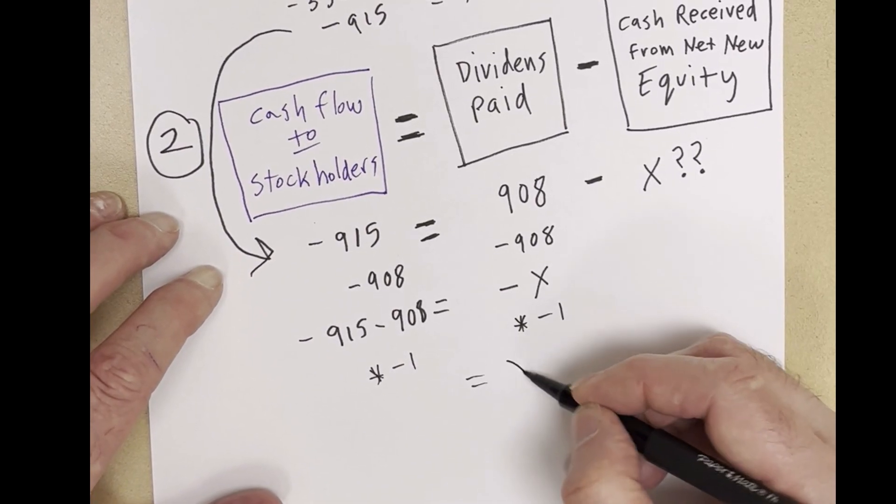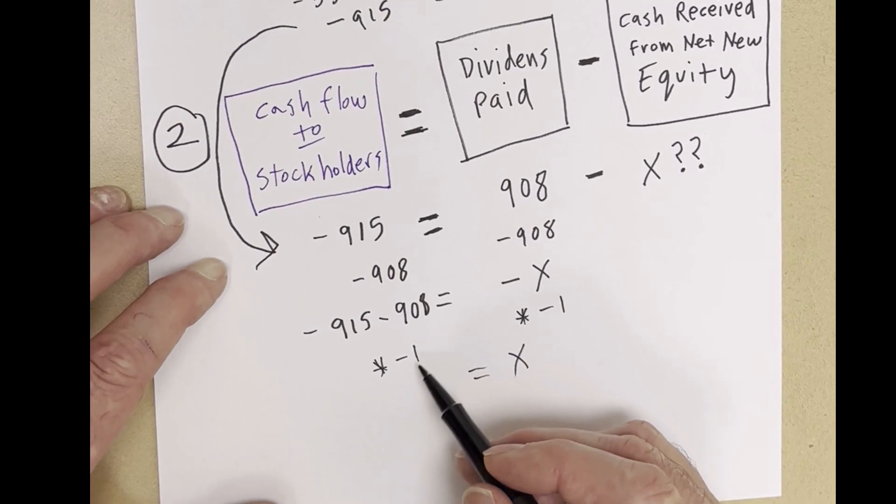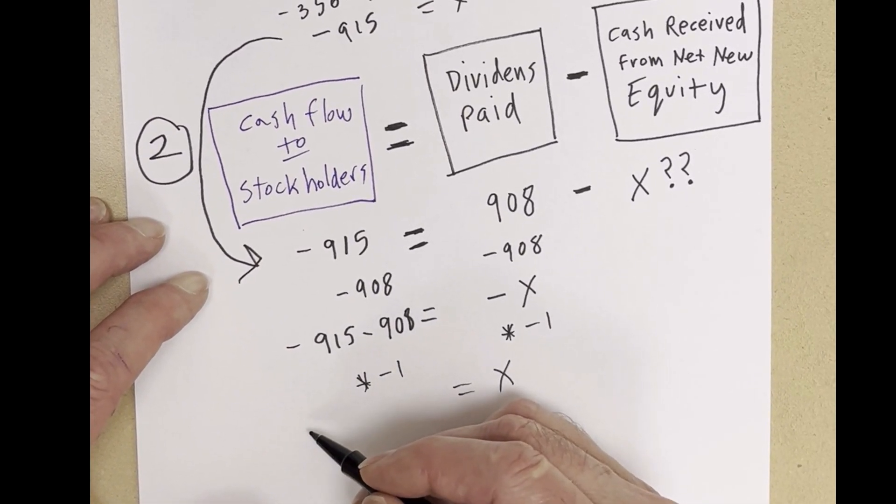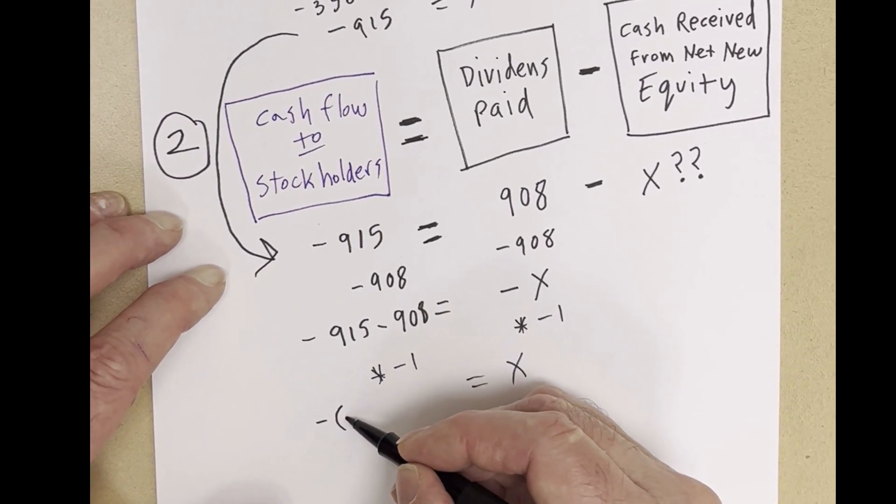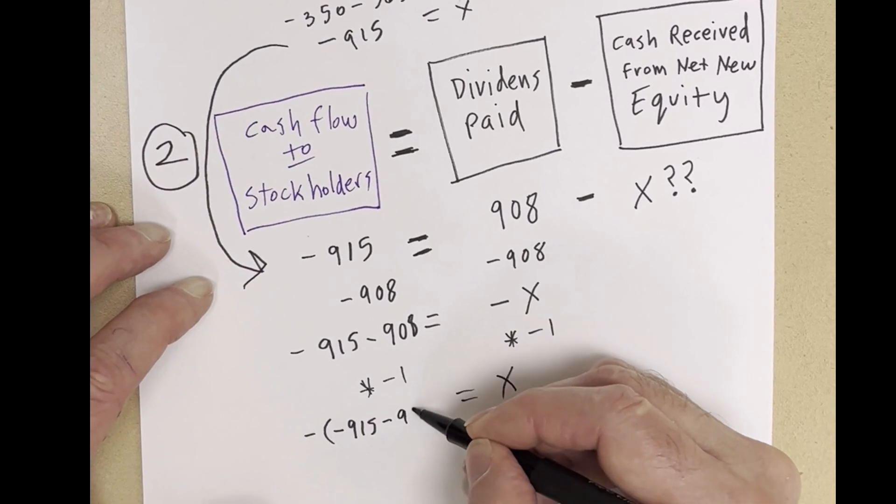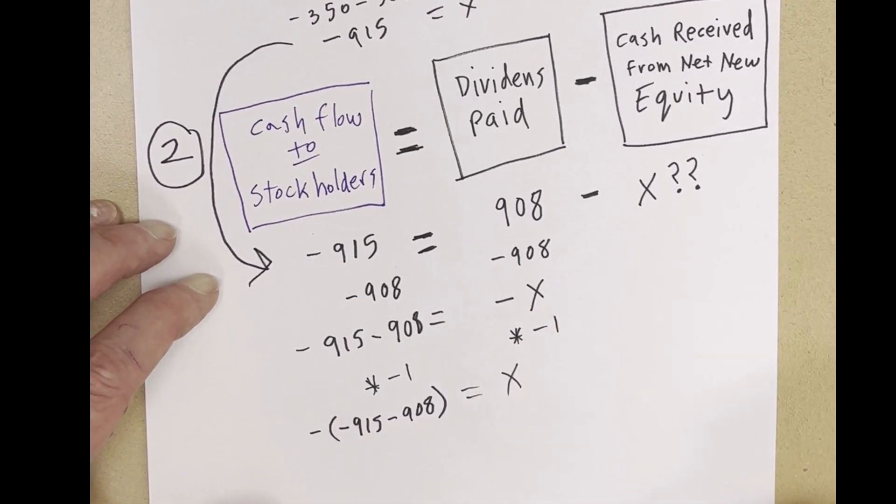So, we get equals our x. But the formula over here, I have to multiply that by this whole thing. So, I'm going to put parentheses, and then on the inside, minus 915 minus 908. And that's the formula you'd put in the cell.